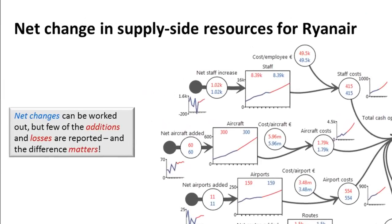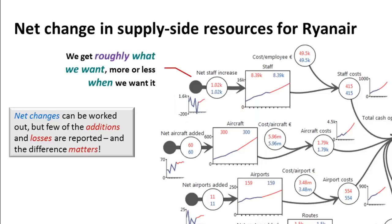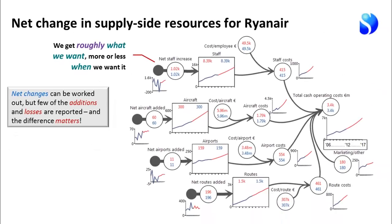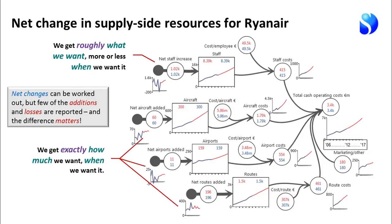The same applies to supply-side resources. The number of staff has changed in the way it has up to 2012 because of the net change in staff numbers added to the business. In most years the airline added staff, but in one year it actually had fewer. In the case of staff, we get roughly what we want — if management says go out and hire over 1,000 people, HR can probably find something like 1,000 people. For other resources it's actually rather easier: you simply get exactly what you want, exactly when you want it.